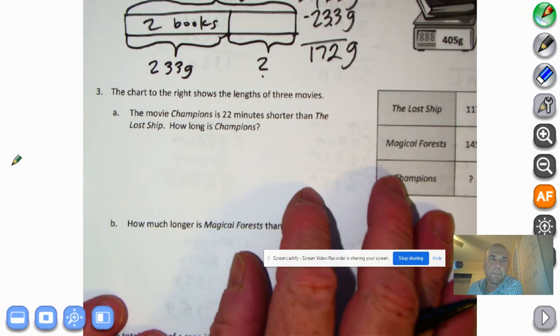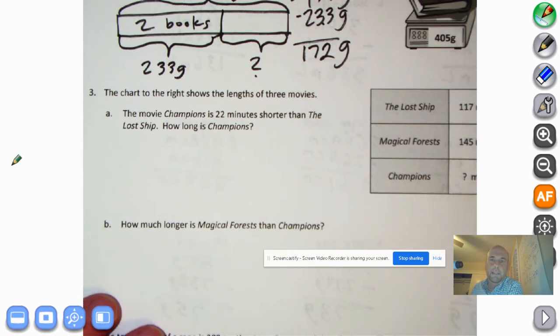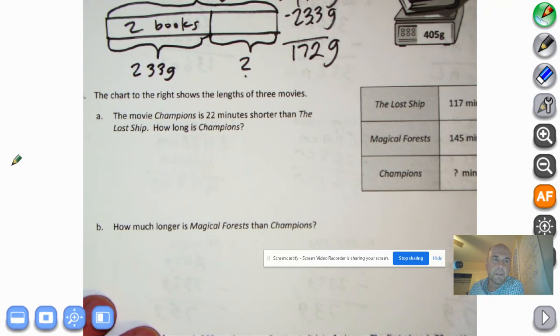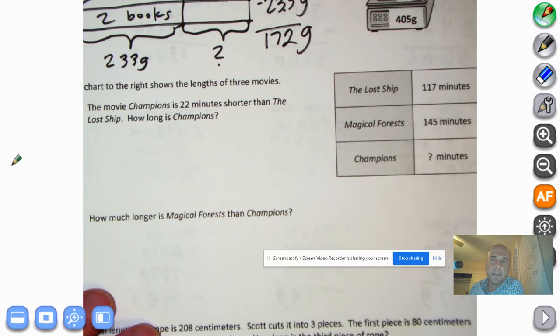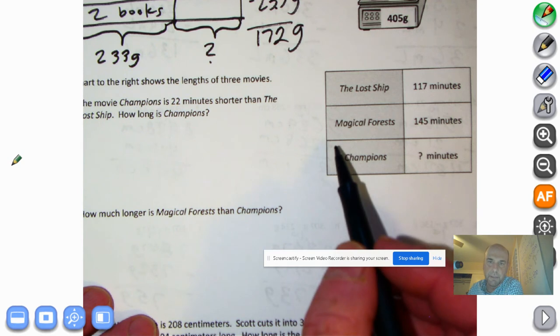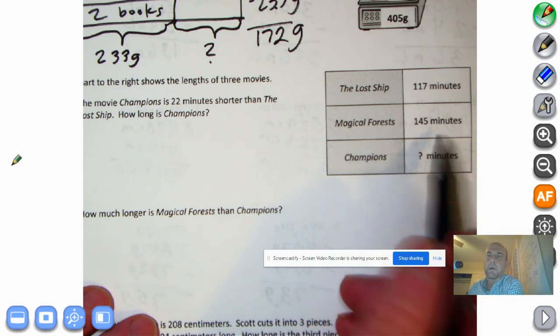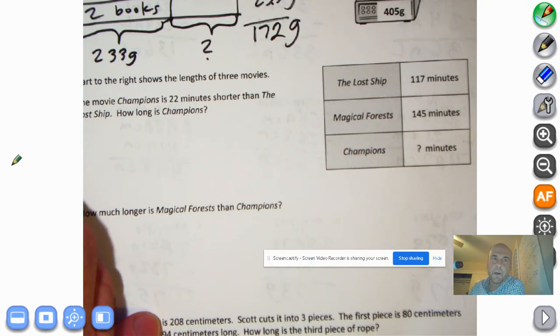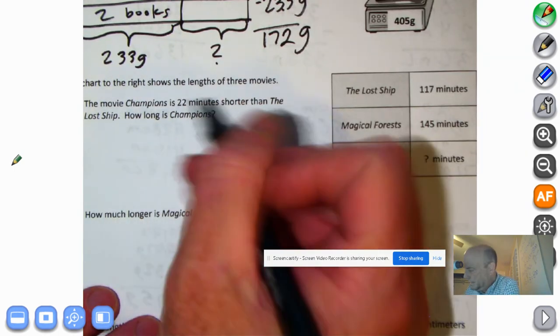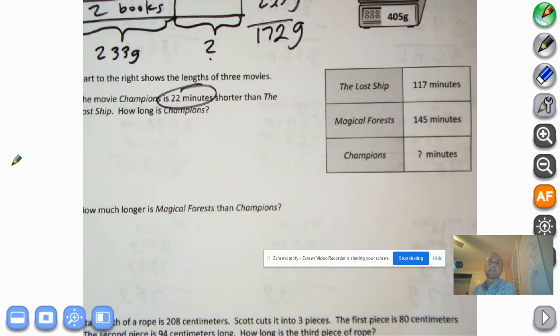Okay, let's keep going. The chart to the right shows the lengths of three movies. The movie Champions is 22 minutes shorter than The Lost Ship. How long is Champions? So we see that the movie The Lost Ship is 117 minutes. The Magical Forests is 145 minutes. And we know that Champions is 22 minutes shorter than The Lost Ship.